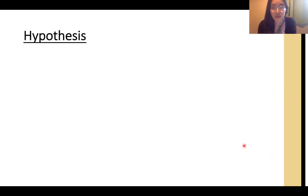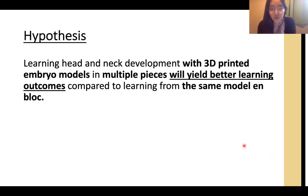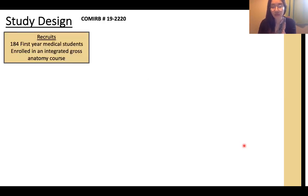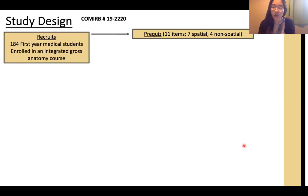The hypothesis is that learning head and neck development with 3D printed embryo models in multiple pieces will give better learning outcomes compared to learning from the same model in a single block. The study was exempted by the Colorado Internal Review Board, and we recruited 184 first-year medical students enrolled in an integrated gross anatomy course. All participants took a pre-quiz with spatial and non-spatial items — spatial items tested embryonic structures and their spatial relations to each other, while non-spatial items tested more lecture-based content.